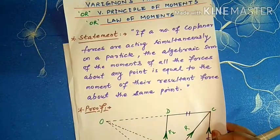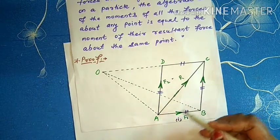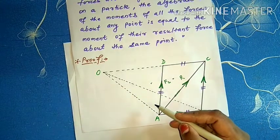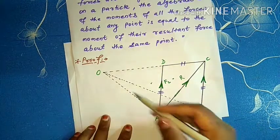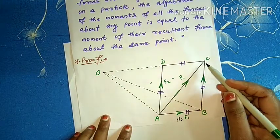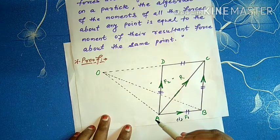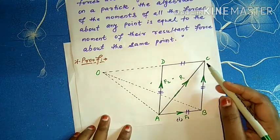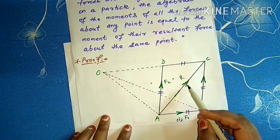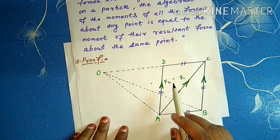So, area(ADC) plus area(OAD) equals area of triangle OAC. And area of triangle OAC corresponds to the moment of the resultant force R about O, since the resultant force R is represented by AC in triangle OAC. Therefore the moment of resultant force R about point O, from the geometrical meaning, equals 2 times the area of triangle OAC.